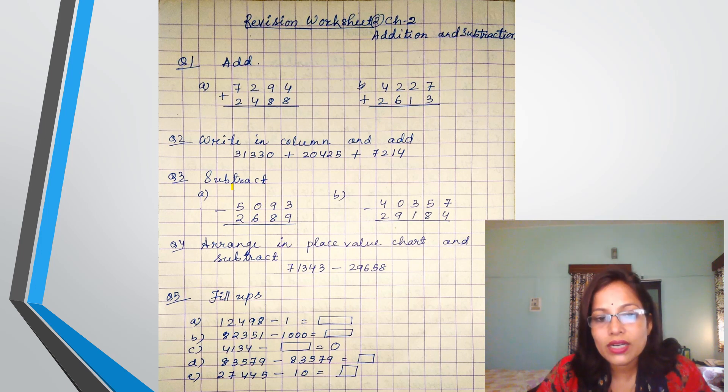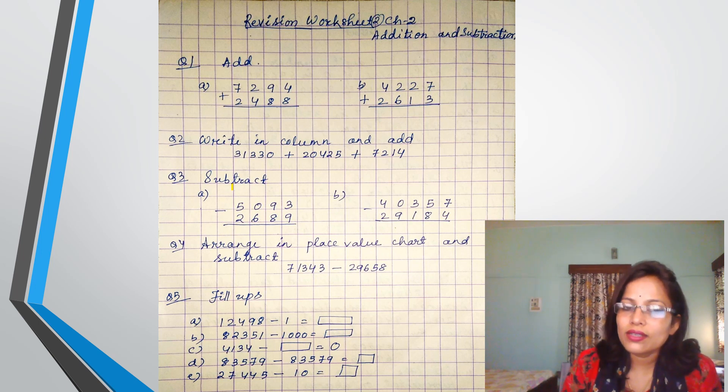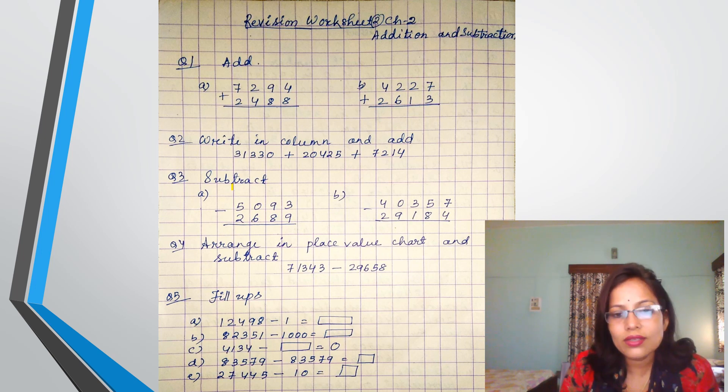Then question 4, arrange in place value chart and subtract. Place value chart means what? You have to arrange in 1, 10s, 100s, 1000s, 10,000s. First you write, then arrange the numbers below 1, 10s, 100s, 1000s, 10,000 places. Then you do the subtraction.